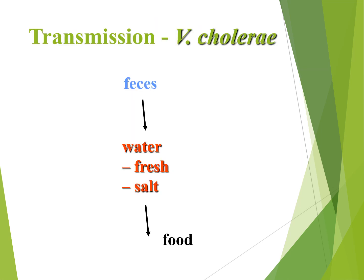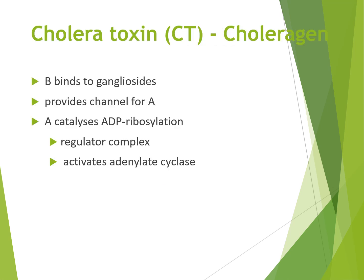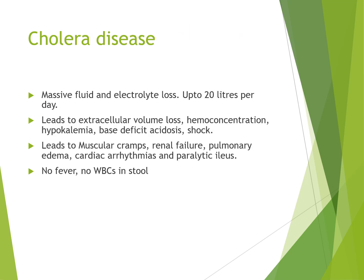Transmission of Vibrio cholera is from faeces to water — fresh water, salt water — and into food. The B subunit of the cholera toxin binds to the glandular side, providing the channel for the A subunit, which catalyzes ADP ribosylation and activates adenylate cyclase. Cholera causes severe disease with fluid and electrolyte loss of up to 20 liters per day, leading to severe effects of fluid loss.